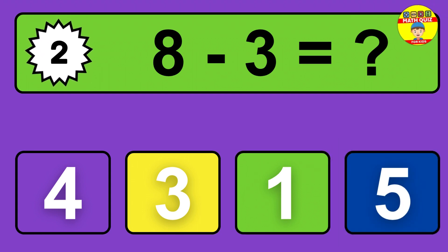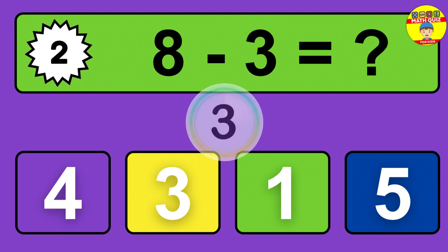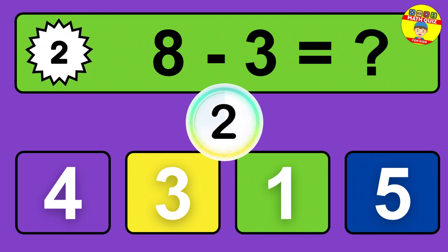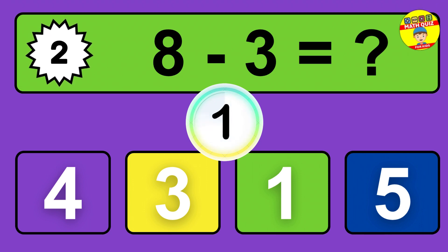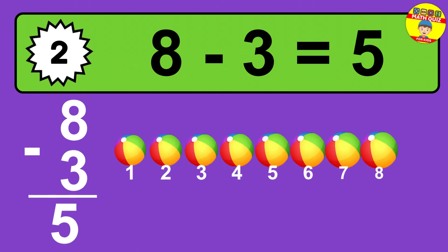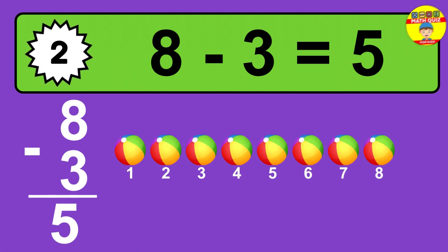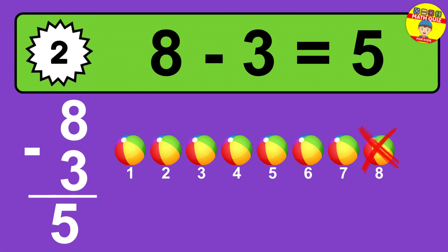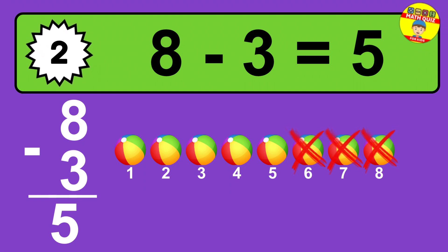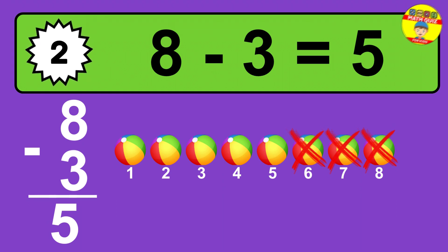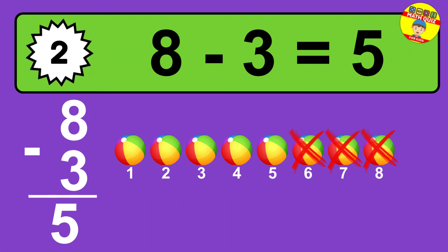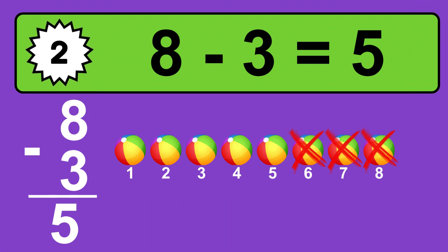Question two: eight minus three equals what? The answer is eight minus three is five. Let's count it: one, two, three, four, five.